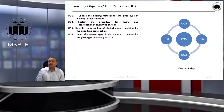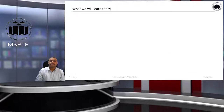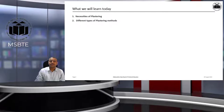This is a concept map of these learning outcomes. Today we will learn: first, necessities of plastering; then different types of plastering methods; then different types of pointing methods.